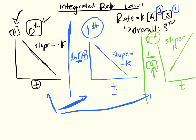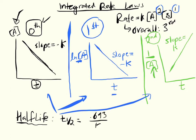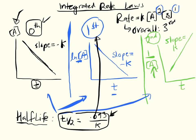Another important concept on the equation sheet is half-life. The half-life is the amount of time it takes for the amount of a reactant to be cut in half — for half of a reactant to be consumed, abbreviated T½. There's only one equation on the AP equation sheet: T½ = 0.693 / k. This is only true for first order reactions. You just divide 0.693 by the rate constant K to get the time needed for half the substance to be consumed.